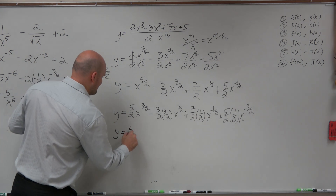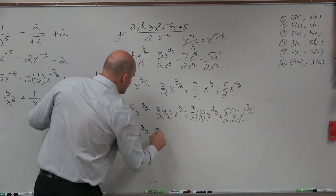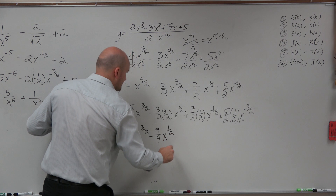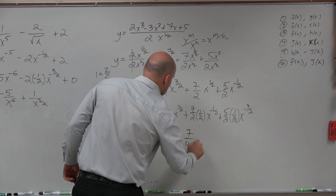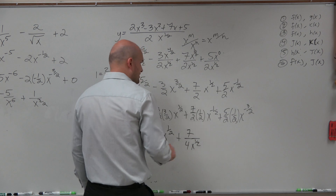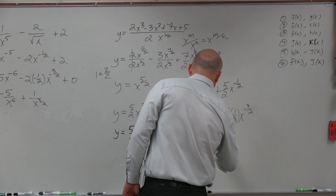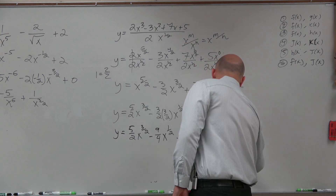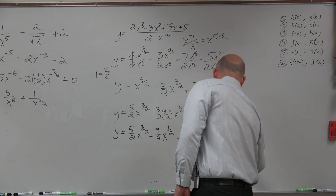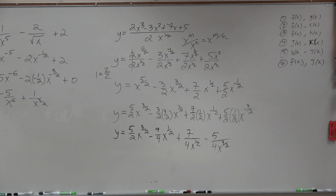Let's go ahead and simplify: 5 halves x to the 3 halves, minus 9 fourths x to the 1 half, plus 7 fourths x to the negative 1 half — since that's negative, I put it in the denominator — and that becomes minus 5 fourths x to the negative 3 halves. You can write them as radicals, but we'll leave it like that. Ladies and gentlemen, fractions are going to be a part of your life in this class.